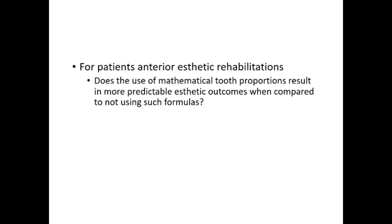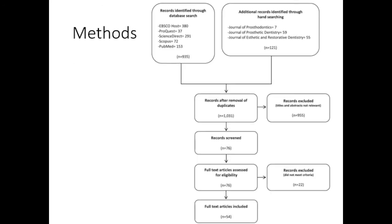The research question for this review was: for patients requiring anterior aesthetic rehabilitations, does the use of aesthetic tooth proportions result in more predictable aesthetic outcomes when compared to not using such formulas? From a total of 131 articles, 955 articles were eliminated through an initial screening of titles and abstracts. The remaining articles were evaluated for eligibility, and a total of 54 articles were included in this review.